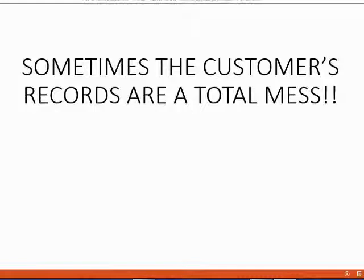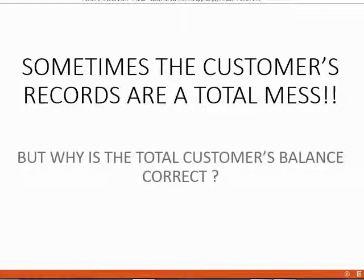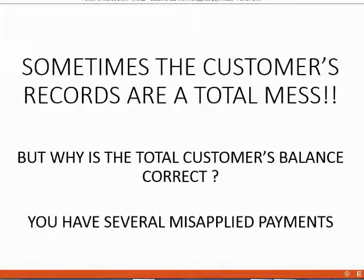Sometimes the customer will call you to complain that the statement you sent is very different from what they have in their computer. However, they still notice that the total balance they believe they owe Holden in their computer is the same as the total balance on the statement. If the records are a mess but the total balance is correct, it must mean that you have several misapplied payments. Have confidence that if the total balance is correct, the only thing you have to do is find and fix misapplied payments.